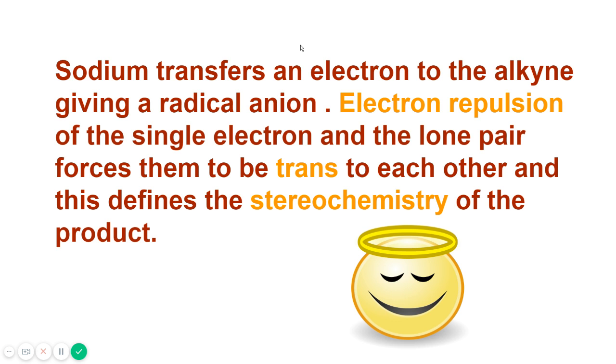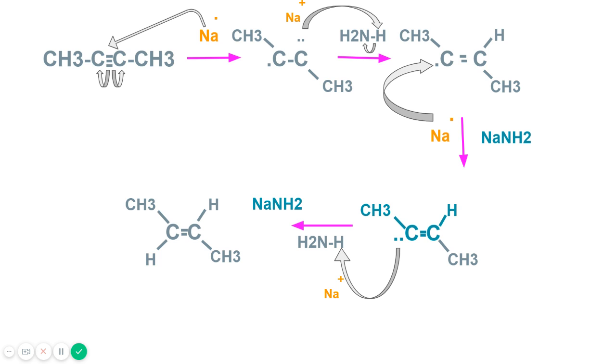Electron repulsion of the single electron and the lone pair forces them to be trans to each other and this defines the stereochemistry of the product which must be trans. You can see here that these two are repelling each other and they are trans to each other, as far apart as possible.